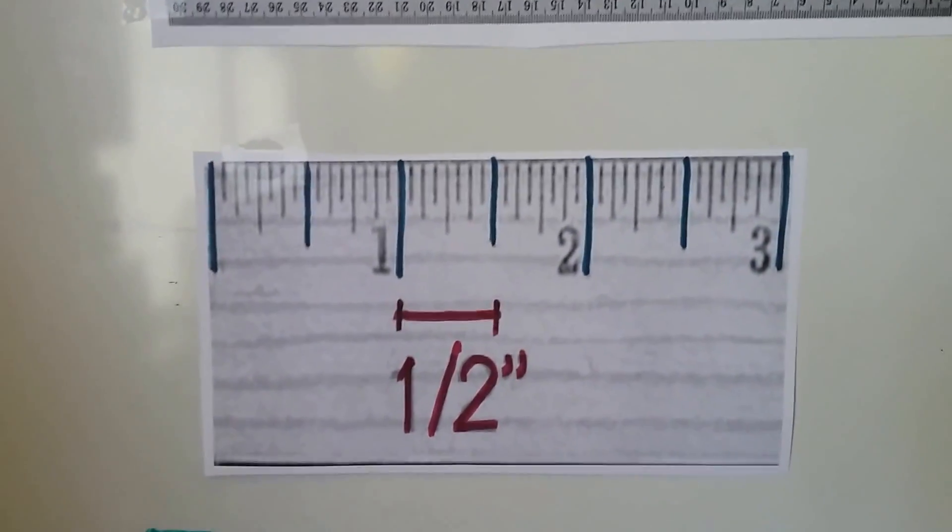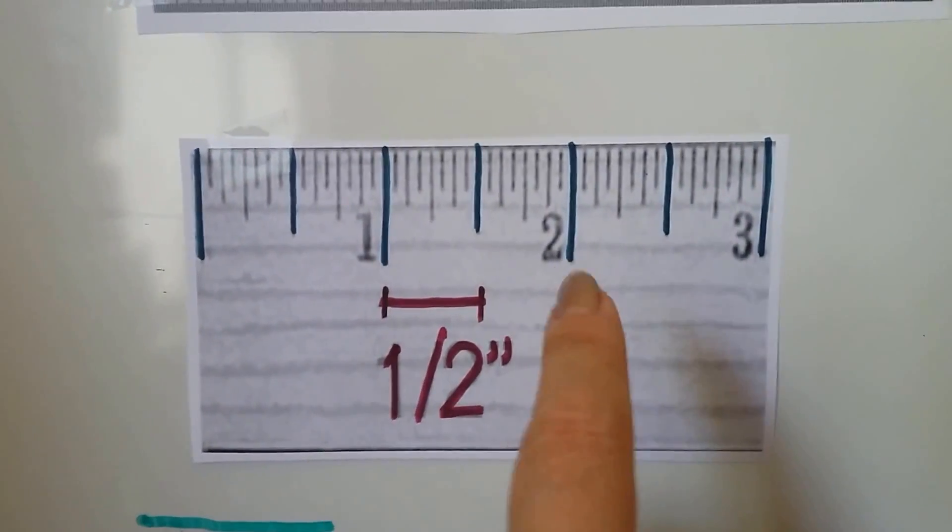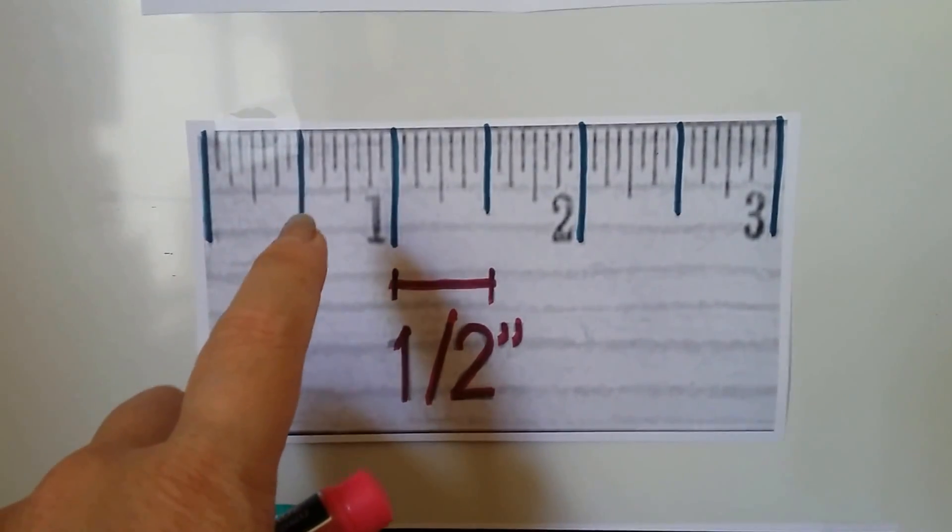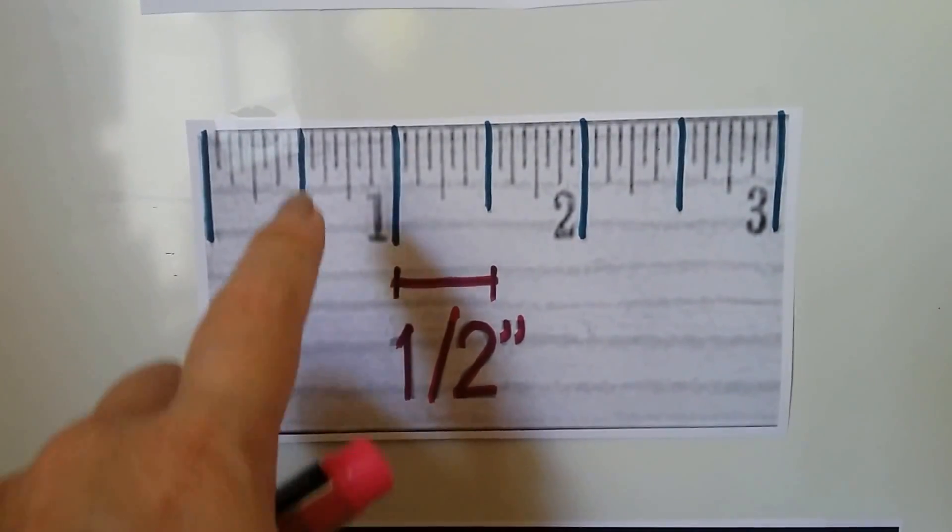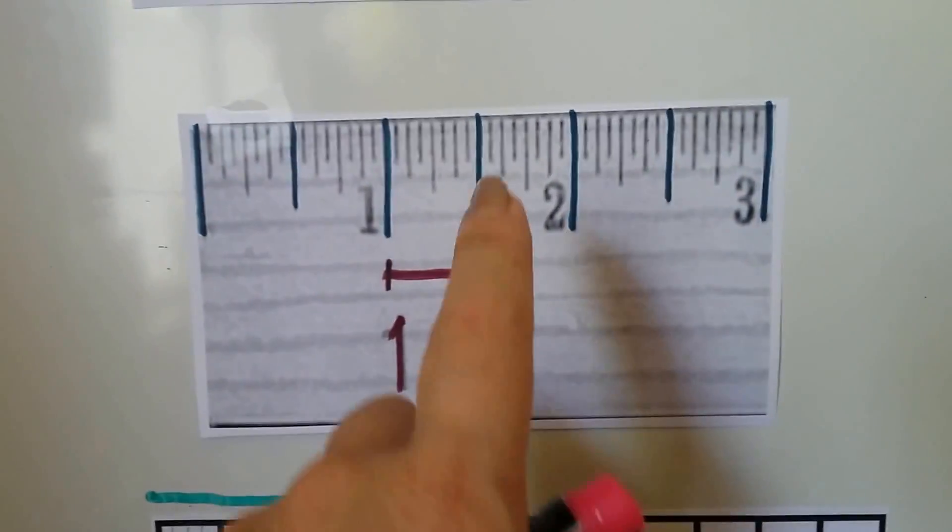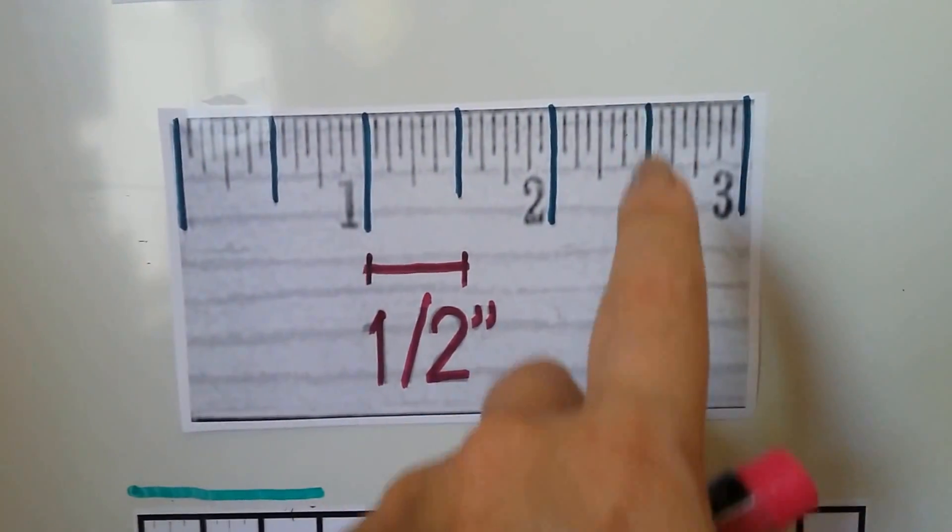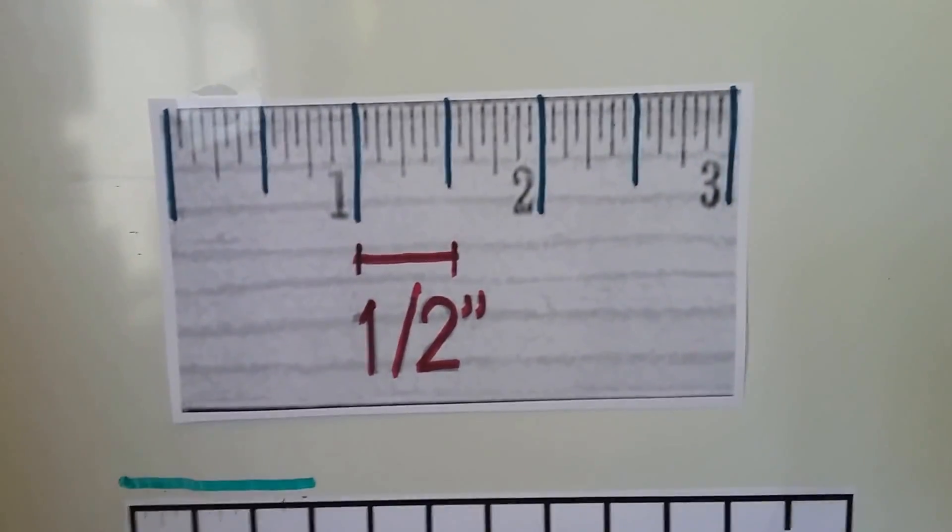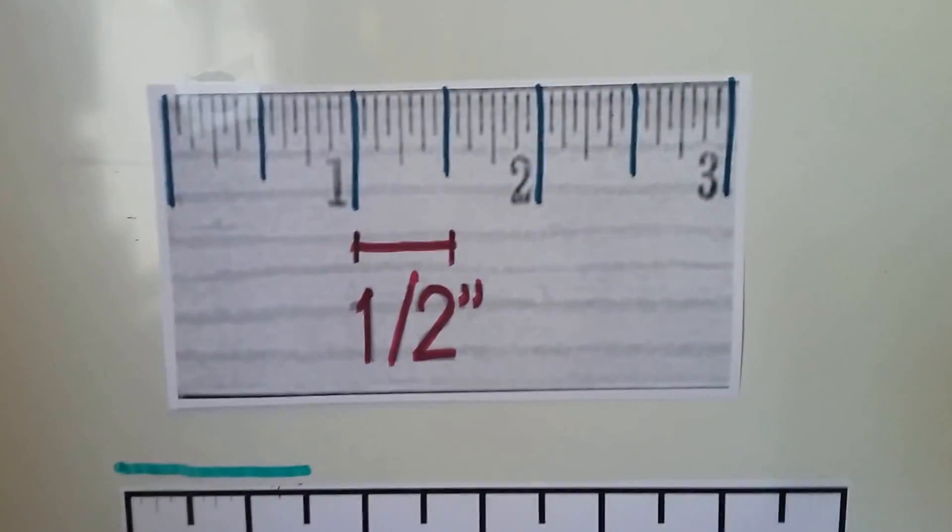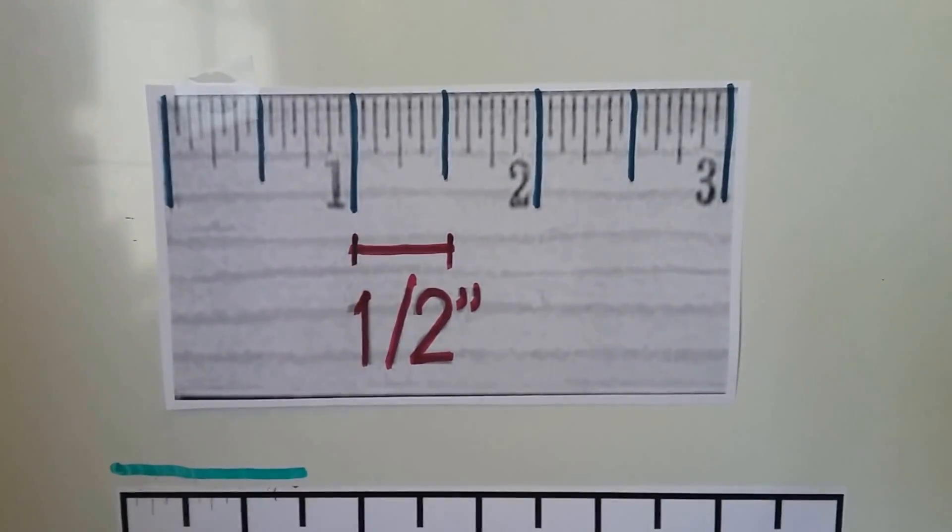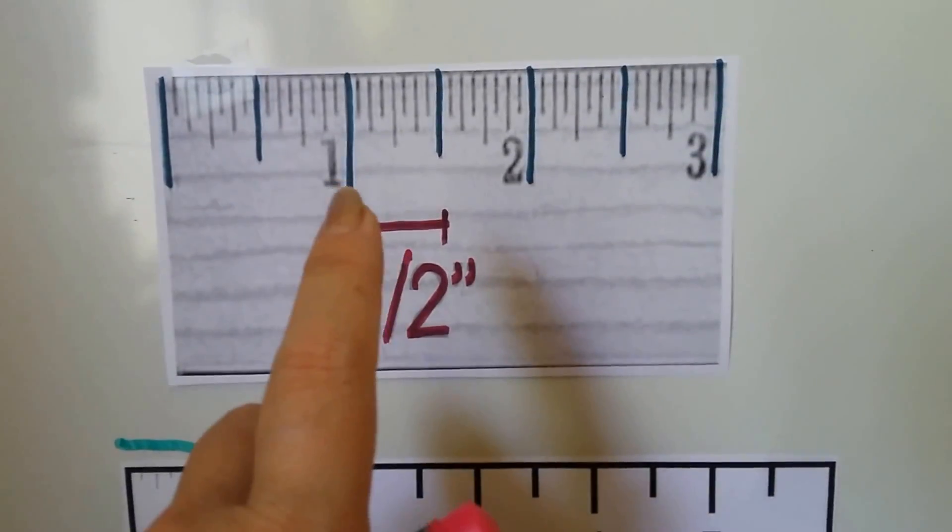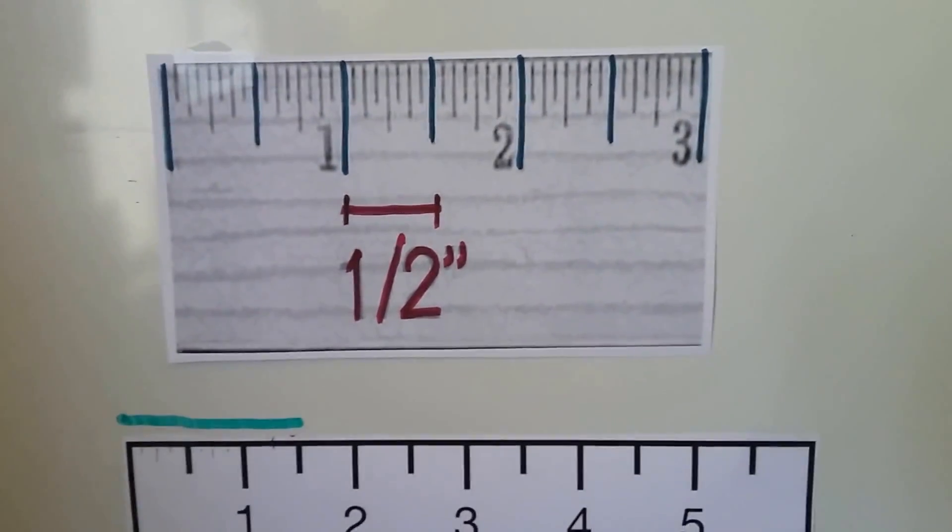If we were to look at it up close, we can see the one, the two, the three for the inches, and there's this medium size line right here. That's the half inch mark. Here it is again, and here it is again. It's in between the numbers. You're going to learn about the rest of these little lines in future grades, but for right now, for second grade, we're just worrying about the inch lines and the half inch lines.